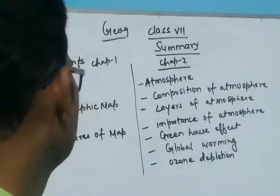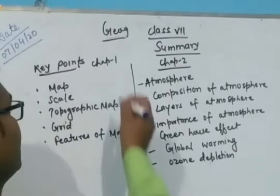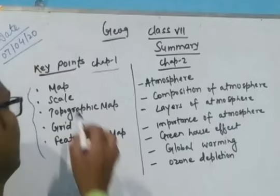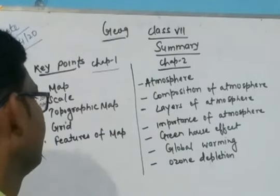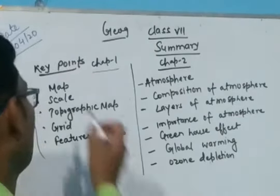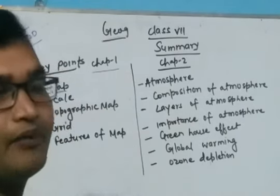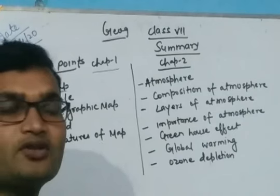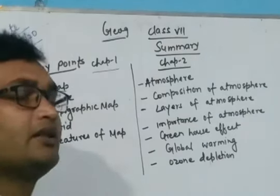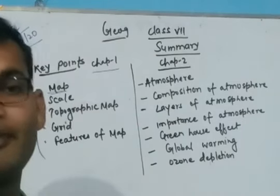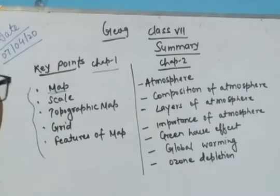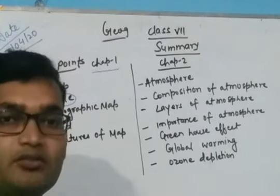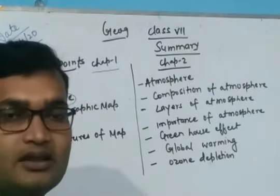The first chapter is the representation of the earth surface, in which we have some points: map scale, topographic map, and features of map. The map is a representation of the earth surface, or part of the earth surface, on a flat surface. There are three types of map: political map, physical map, and thematic map. Some features of the map are scale, direction, symbol, and color.